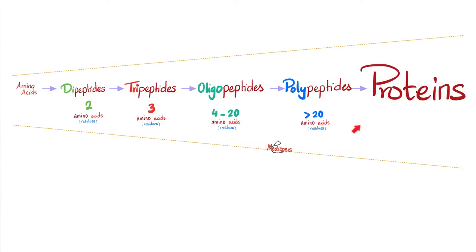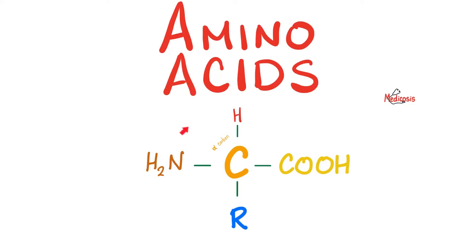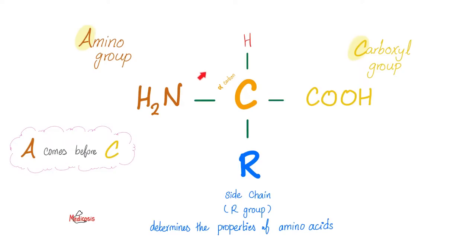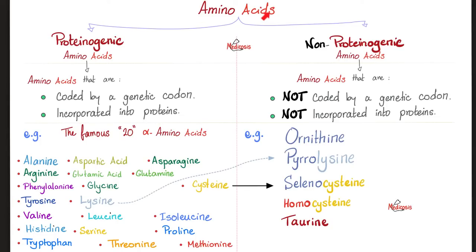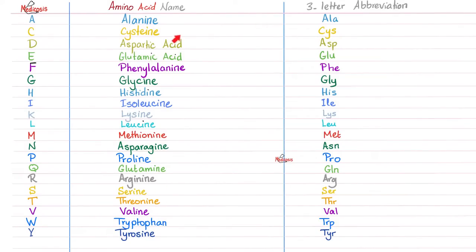Amino acids are the building blocks of proteins. Why do we call them amino acids? Because they have an amino group and a carboxylic acid group. How many proteogenic amino acids are in the human body? 20. Today we shall focus on valine, leucine, and isoleucine. These are the 20 proteogenic amino acids — each one has a name, a one-letter abbreviation, and a three-letter abbreviation.